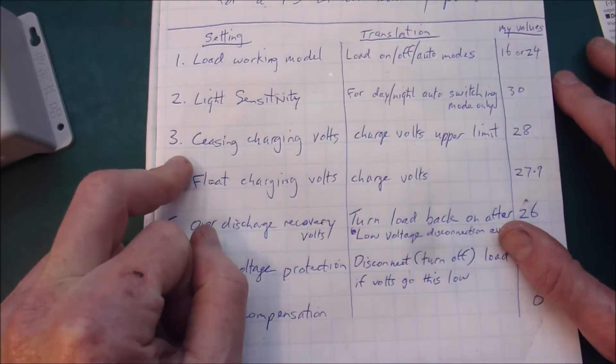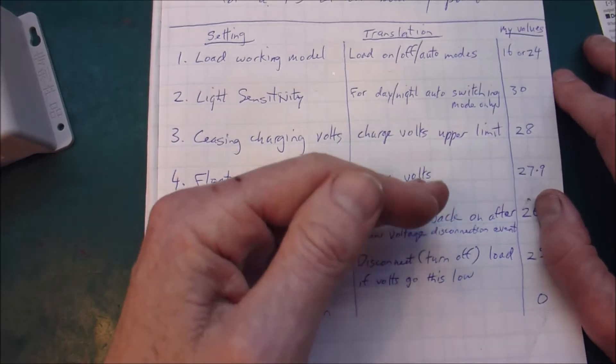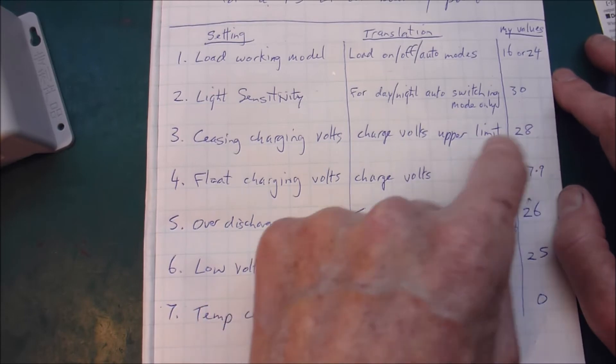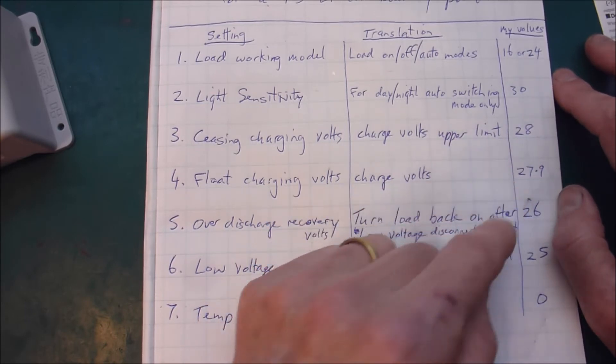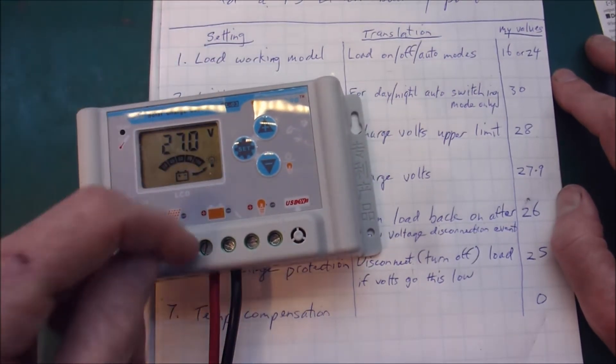Setting number three is ceasing charging volts, which basically means that is the upper limit that it will charge to. So this one and the next setting are the critical settings for a Powerwall. They will tell this unit when to stop trying to charge the batteries.